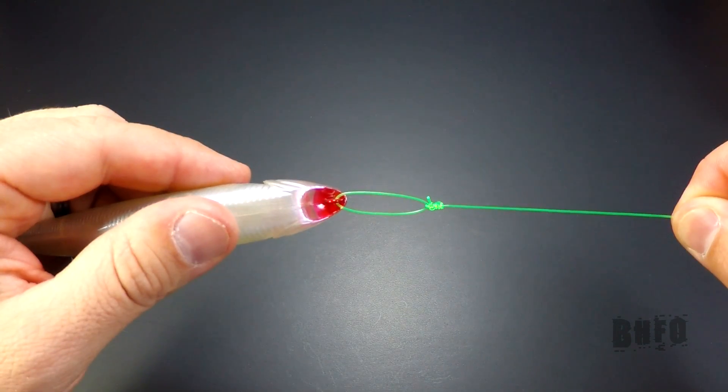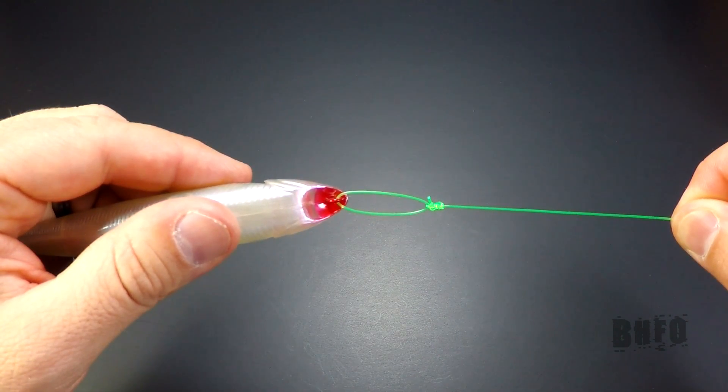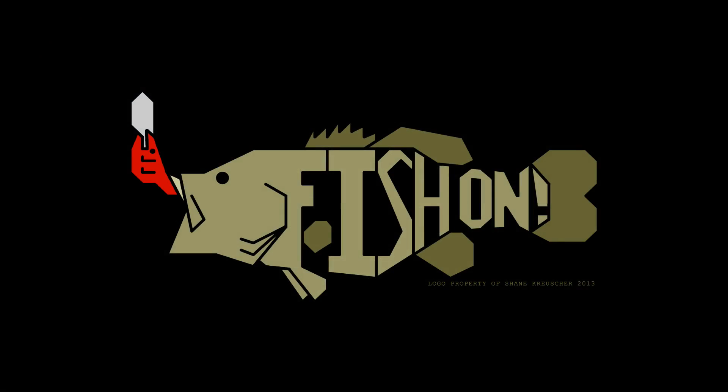You just learned how I tie the non-slip mono loop knot. Thanks for watching and as always, fish on.